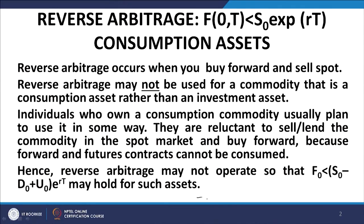We are talking about the case of reverse arbitrage. In the case of reverse arbitrage, as you can see, F naught is less than S naught exponential RT, which is the theoretical forward price. Because S naught exponential RT is greater, we sell it in the spot market and buy and replenish the asset in the forward market. This is the philosophy of reverse arbitrage. During the period from T equal to 0 to capital T, you are dispossessed of the possession of the asset.